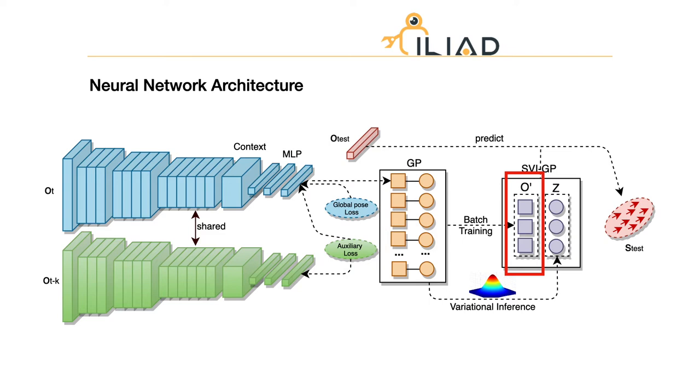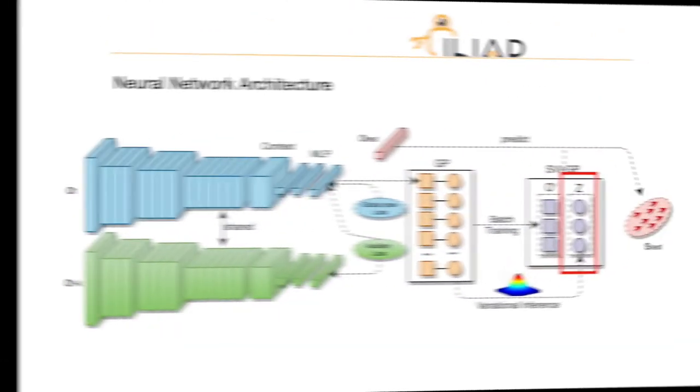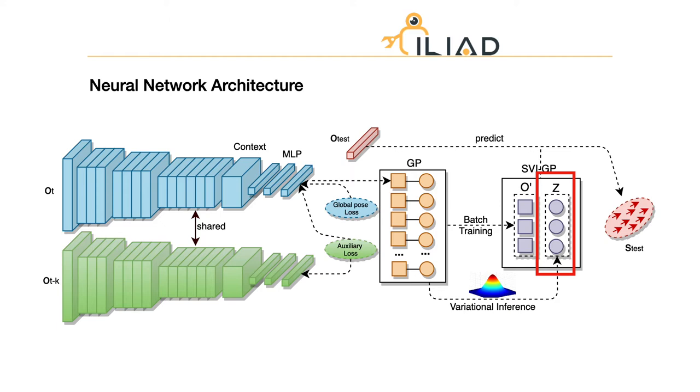Here, a reduced set O prime is used to approximate the whole training set. O prime is also known as inducing points, which is the learnable parameters of the model. The capital Z is the latent variable of the inducing points. The posterior of the latent variable can be estimated by variational inference. The prediction of the deep net is a multivariate Gaussian. We can sample particles from the Gaussian distribution.